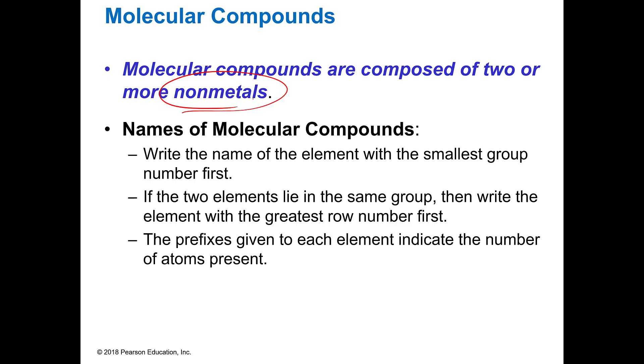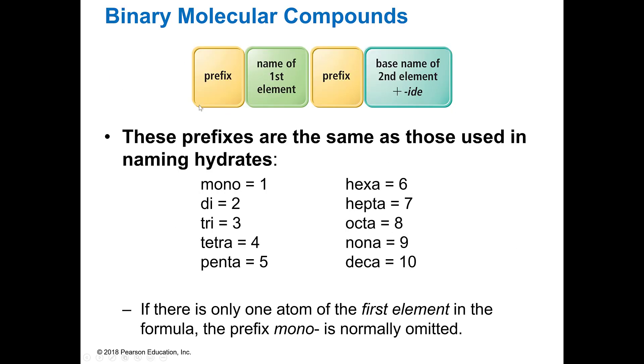When we name molecular compounds, you write the name of the element with the smallest group first. If the two elements are in the same group, then you write the element with the greatest row number first. And then the prefixes are given to each element depending on how many you've got. That sounds all crazy, but it's really not. These prefixes are the exact same ones that we used in the hydrates. So you don't have to learn them once.